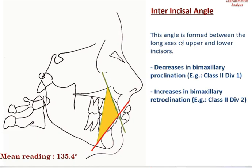The next angle is the interincisor angle, formed between the long axis of the upper and lower incisors. A decreased angle is seen in cases of bimaxillary proclination. As in Class II division 1 cases, you will see a decrease in the angle, whereas an increase is seen in Class II division 2 cases.